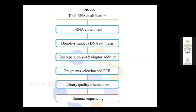Next is fragment selection and PCR. The fragments have to be selected, primers have to be designed, and these fragments are used for PCR. Then the primers are added to the fragments and PCR is performed subsequently. Finally, when all these sequences are obtained, we have to prepare a library. Library quality assessment — how the library has been prepared, whether it has quality — must be done. With that quality library only can we go for Illumina sequencing.